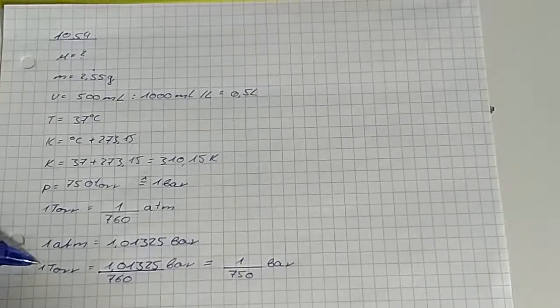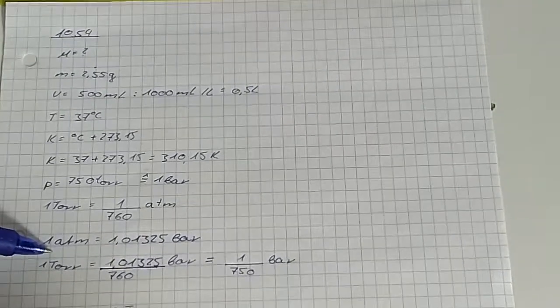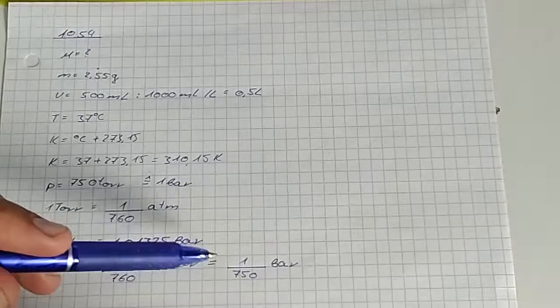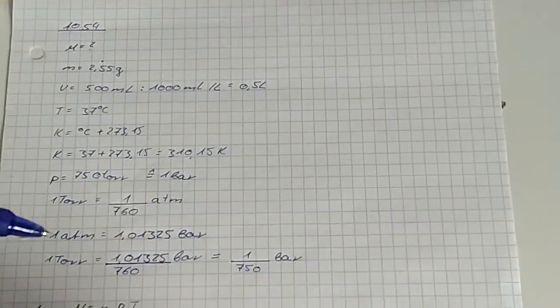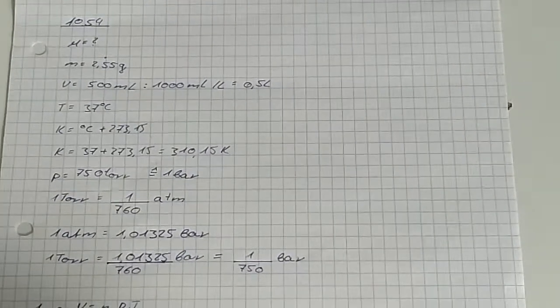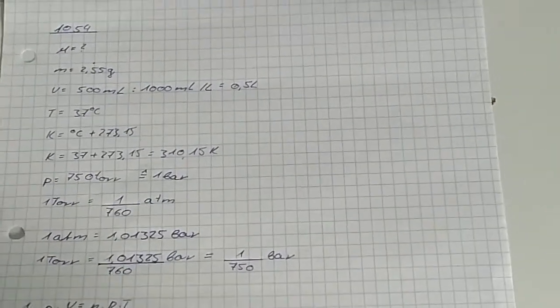Calculated, 1 torr is equal to 1 divided by 750 bars. We have to make these conversions in order to be able to calculate easily.